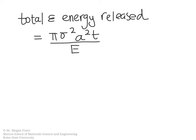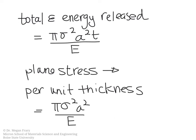If we are assuming plane stress, then we can do this per unit thickness. In that case, the total strain energy released is given by pi sigma squared a squared divided by E — we've normalized by the thickness. So this is the first energy term: the elastic energy released in the volume.